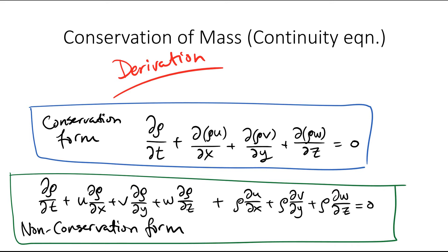This video will show a derivation of the conservation of mass. I've chosen the conservation form of the equation, but the non-conservation form could also easily be derived. Comparing the two methods when it comes to numerical methods, the conservation form is usually preferred for all dependent variables, especially when we have strong discontinuities in the flow.